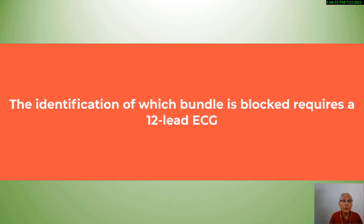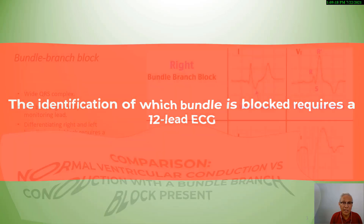Although a bundle branch block can be recognized by a monitoring lead such as lead 1, lead 2, and lead 3, identification of which bundle is blocked is going to be difficult utilizing just a monitoring lead. In order to differentiate the right and left bundle branch block, a 12-lead electrocardiogram needs to be obtained.